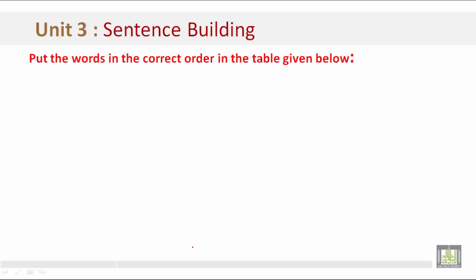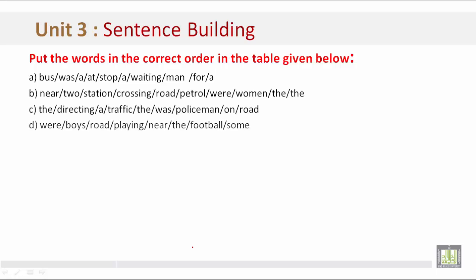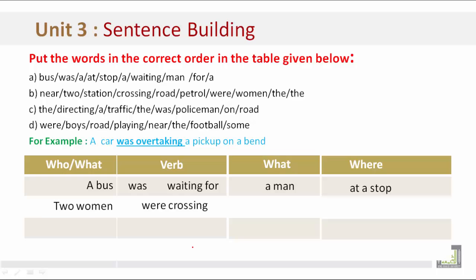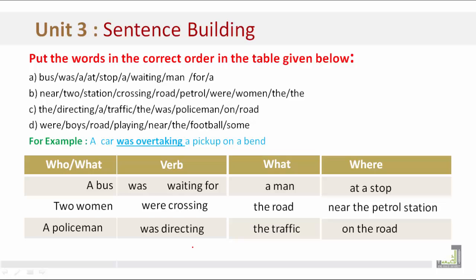Sentence Building: Put the words in the correct order in the table below. Let's look at examples A, B, C, and D. For example: 'A car was overtaking a pickup on a bend.' Let's fill in the chart: 'A bus was waiting for a man at a stop.' 'Two men were crossing the road near the petrol station.' 'A policeman was directing the traffic on the road.' 'Some boys were playing football near the road.'